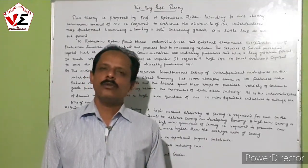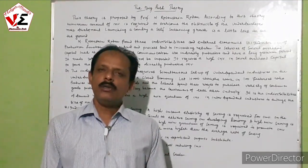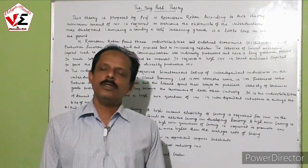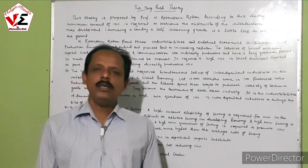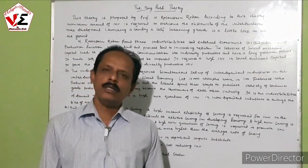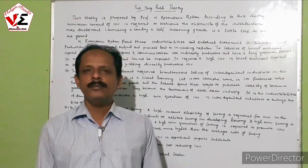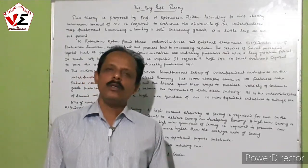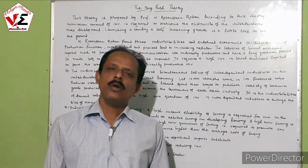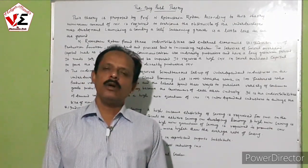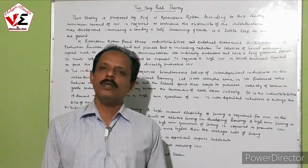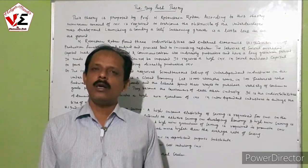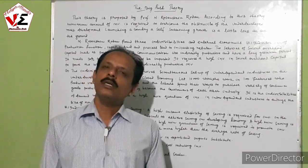According to Professor Rosenstein Rodan, there are three individualities: individuality in social overhead capital, individuality on the demand side, and individuality in supply of savings. These factors are responsible for the big push of the economy, bringing underdeveloped and developing economies into the right track of development. Minimum investment is necessary to achieve this.